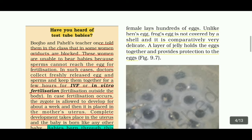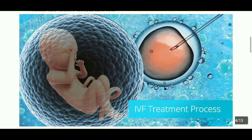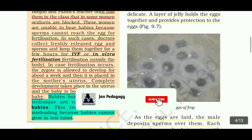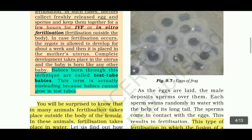Complete development takes place in the uterus and the baby is born like any other baby. Babies born through this technique are called test tube babies. This term is actually misleading because babies cannot grow in a test tube.